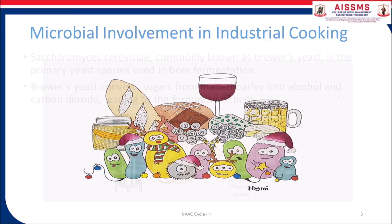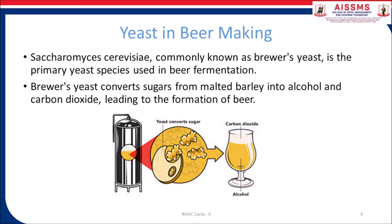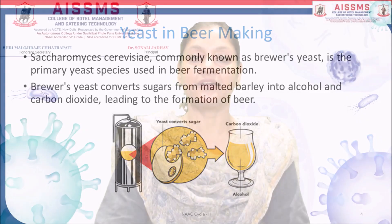Yeast in beer making. In beer making, yeast fermentation is a critical step in the production of alcoholic beverages. Imagine yeast as a bustling worker in a brewery, tirelessly converting sugars from barley into alcohol and carbon dioxide. Without yeast, our beloved beer wouldn't have its signature bubbly texture and intoxicating kick. Saccharomyces cerevisiae, commonly known as brewer's yeast, is the primary yeast species used in beer fermentation, converting sugar from malted barley into alcohol and carbon dioxide.